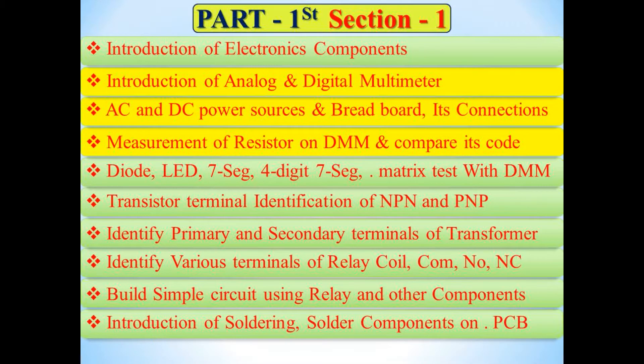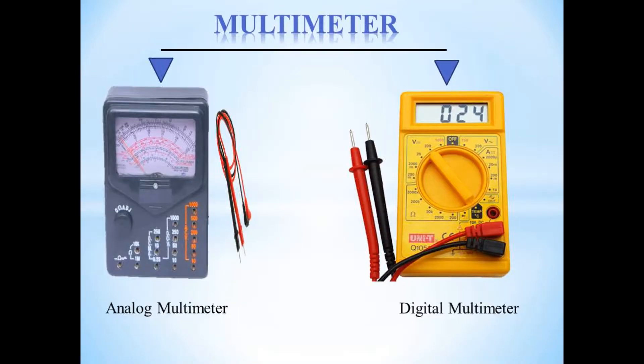Introduction to Analog and Digital Multimeter. Analog Multimeter: it is a test instrument based around the use of a moving coil multimeter. This is an analog form of display. Digital Multimeter: it is a test instrument based around the digital system. This is a digital form of display.